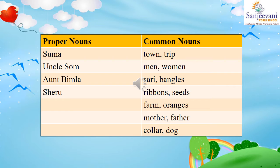Moving to the next sentence: 'This was her first trip to town.' Town here is again a common noun — we have already written it, so we will not write it again. 'Her first trip' — trip is a journey, so trip is also a common noun. We will write it next to town.